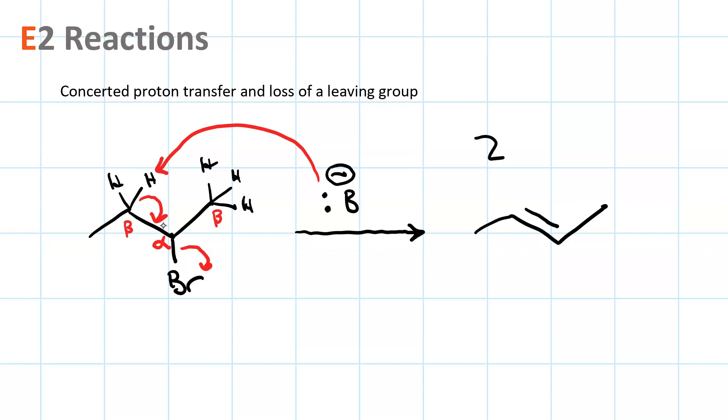This is called the Zaitsev product. And it gives you the more substituted and therefore the more stable alkene.